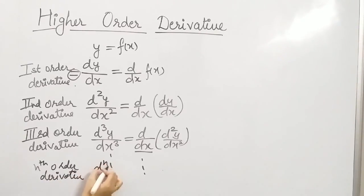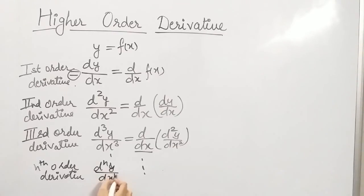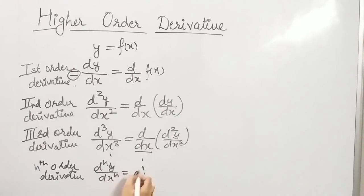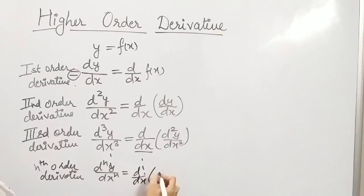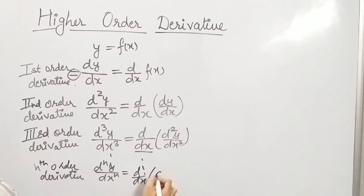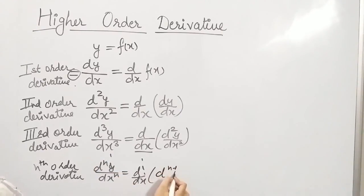Similarly, we can find the nth order derivative, which is dⁿy upon dx raised to power n, which is the differentiation of the previous derivative — that is the (n−1)th term.